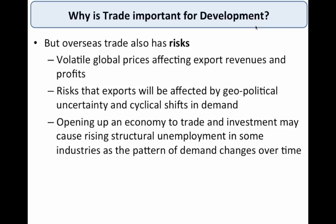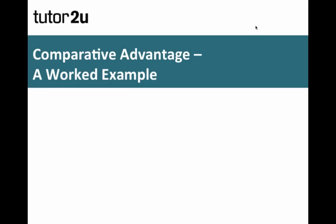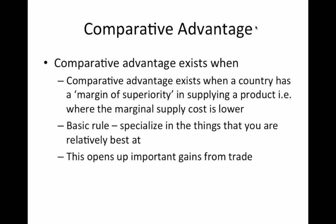What I thought I'd do in this middle section is take you through one example of comparative advantage. Comparative advantage is the idea that a country can have a relative advantage in producing a product — another phrase for that is a margin of superiority — meaning they can sell a good or service at a lower marginal cost than perhaps a producer in another country. The basic rule is: specialize in the goods and services that you are relatively best at, and that should, in theory, create some gains from trade.